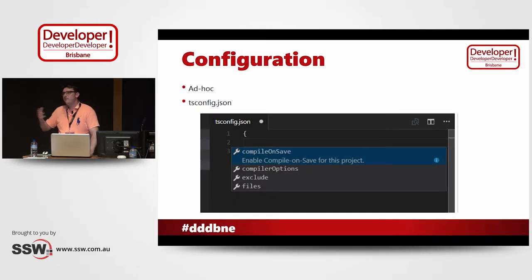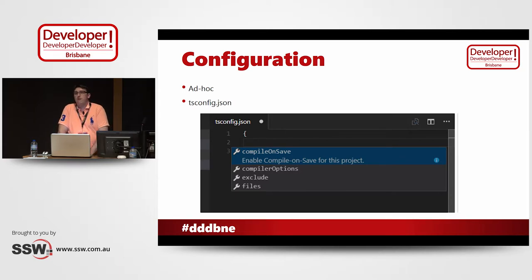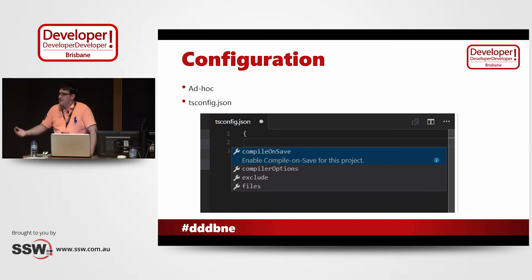So before we get too much further, TypeScript does have a compiler, so how can we configure this thing? One easy way, and the way I've done it for a fair while, is you can just do it ad hoc. You can load up Visual Studio 2015 or 2017, make a file, give it a .ts extension, save it, and you're going to get a JavaScript file right alongside it. The recommended way these days, and the way I've got it here, is we can have a tsconfig.json file.